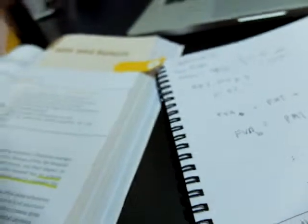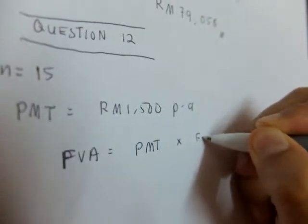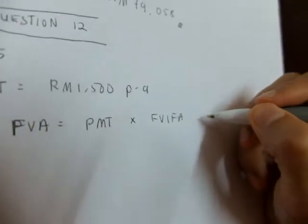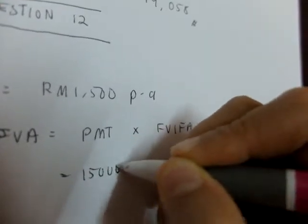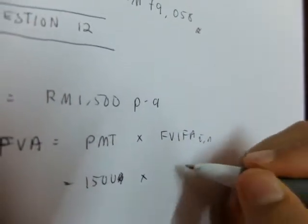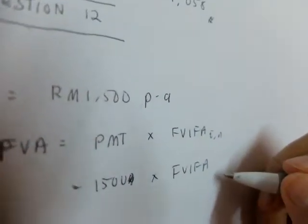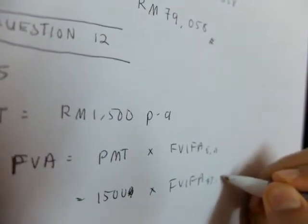So your future value of an annuity, again, you get your payment and you multiply by your interest factor of an annuity. So your payment is $1,500 multiplied by the FVIFA factor at 7% for 15 years.